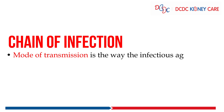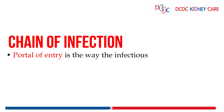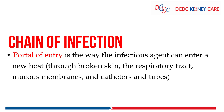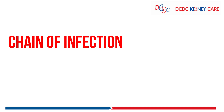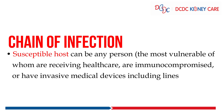Number 4 is the mode of transmission — the way the infectious agent can be passed on — through direct or indirect contact, ingestion or inhalation. Number 5 is the portal of entry — the way the infectious agent can enter a new host — through broken skin, the respiratory tract, mucous membranes, and catheters and tubes. Number 6 is the susceptible host, which can be any person, but most vulnerable are those receiving healthcare who are immunocompromised or have invasive medical devices including lines, devices and airways.